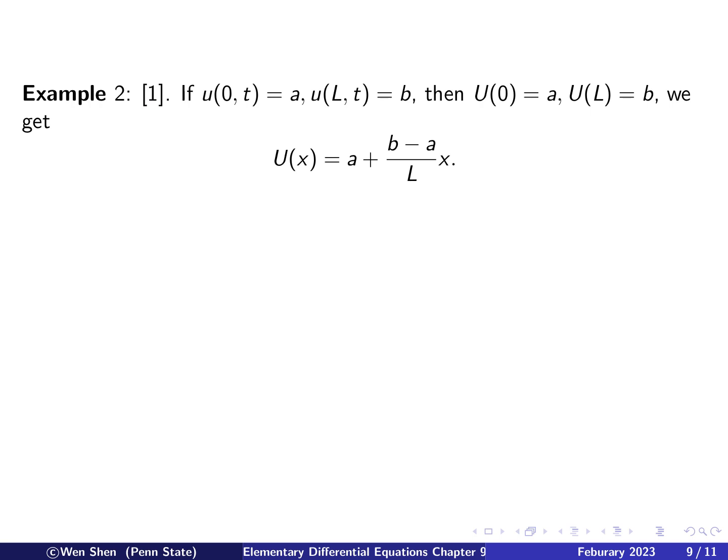So let's take an example on finding the steady states with various boundary conditions. So the first one is the boundary condition at zero is a and at L is b for the u, the solution for the heat equation. Then we know that the steady state will keep the boundary conditions. So capital U at zero will be a and capital U at L will be b.